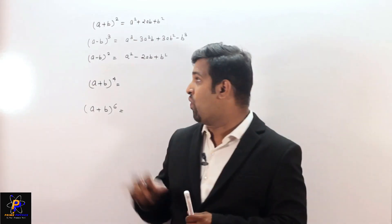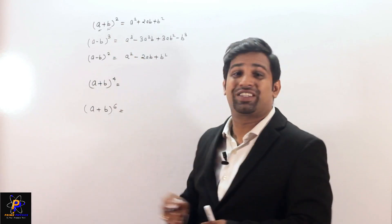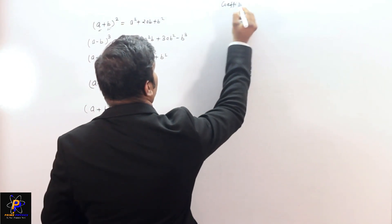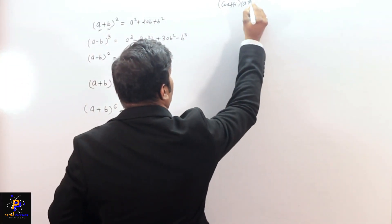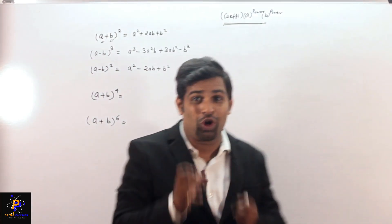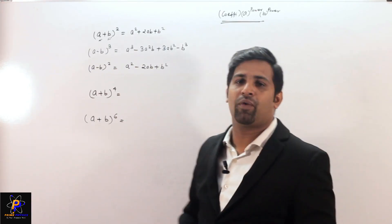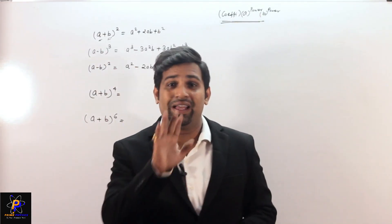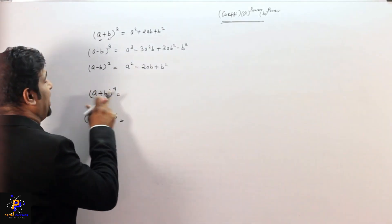I always say there are three things when writing any formula. First is the first term 'a', second is 'b', and the third thing is the coefficient. So what do we write first? We write the coefficient, then a to some power, and b to some power. For example, in any term, check what the coefficient is, what power a has, and what power b has.